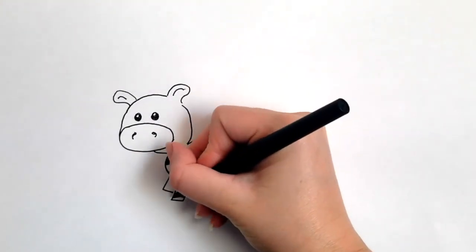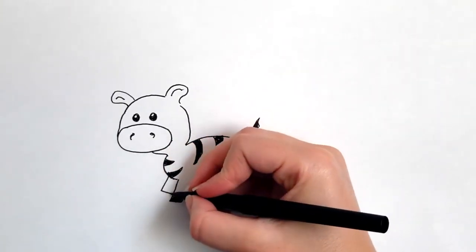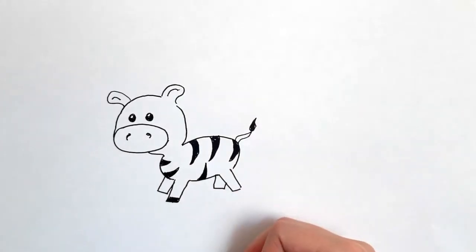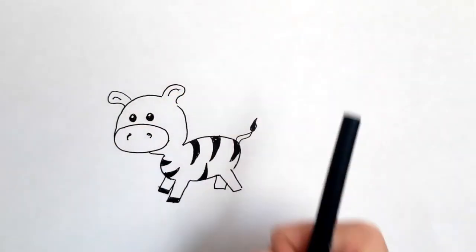Okay, so now we also want to add the color of the hooves. So we're gonna add another box at the bottom of each of the legs and then fill it in like we did for the stripes.